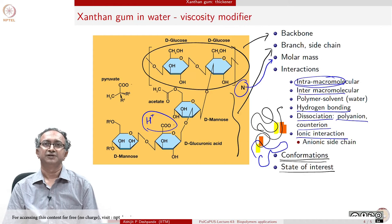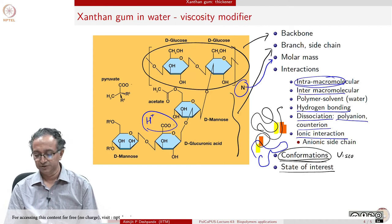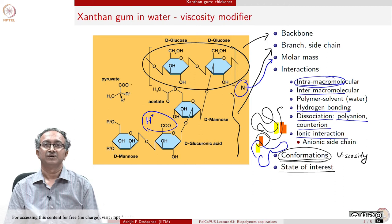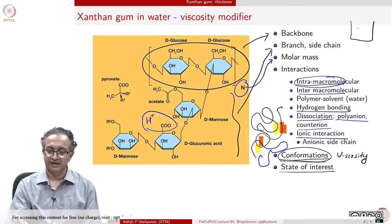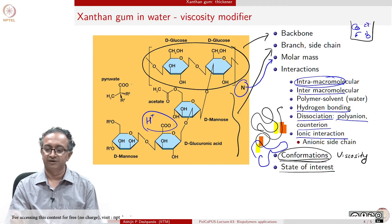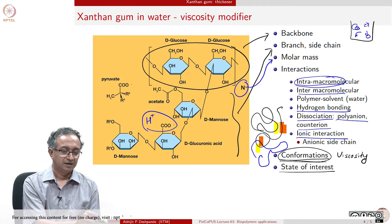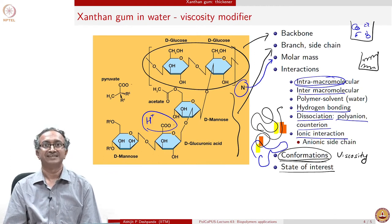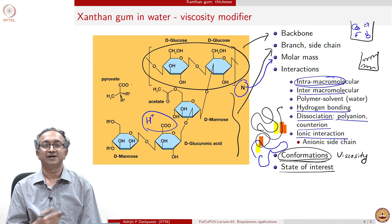From a practical point of view, what are the conformations a polymer molecule takes in solution? Whether it takes an extended or coil-like conformation is important for viscosity. Think of a beaker with coil-like objects versus one with extended chains of xanthan gum — stirring one versus the other would require different amounts of energy if viscosity differs.